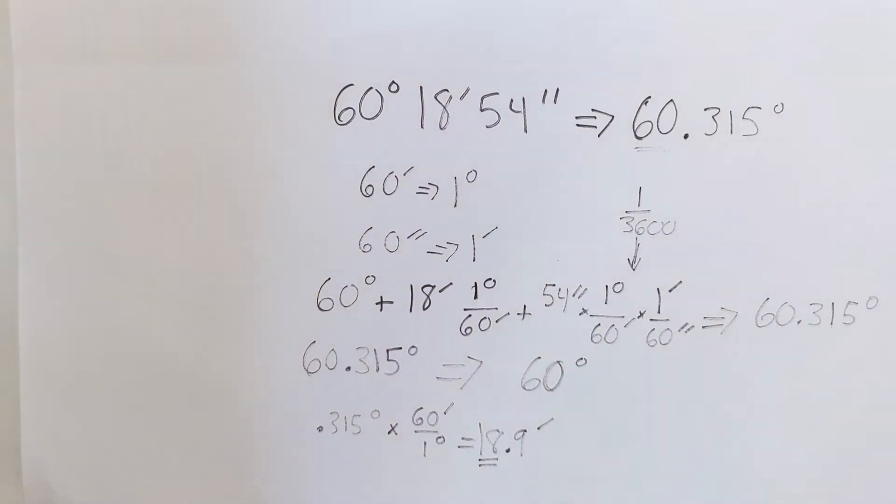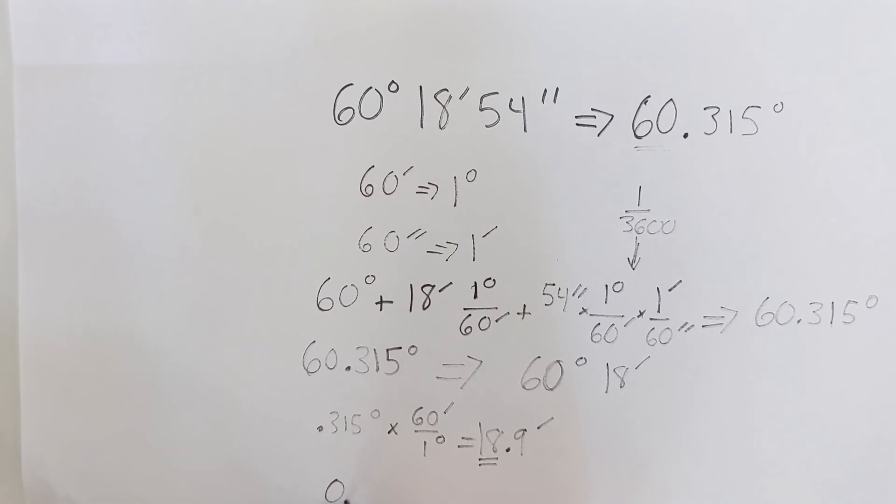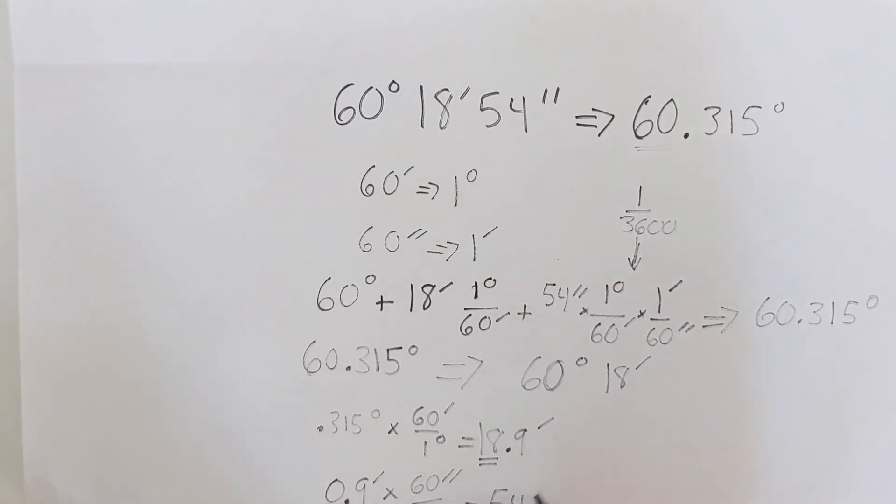So again, we're going to take our whole number, we're going to take that 18 for our minutes. And now we're left over with this 0.9. So we have 0.9 minutes. We want to convert this into seconds. So we're going to multiply that by 60 seconds in one minute. And that's going to give us 54 seconds.